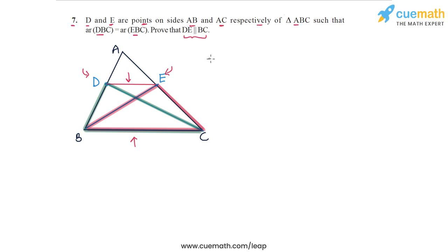In this case, triangle DBC and triangle EBC are on the same base. What is that base? The same base is BC. And also we are given that area of DBC is equal to the area of EBC.